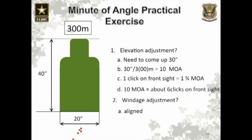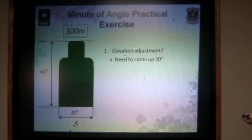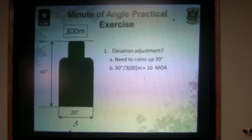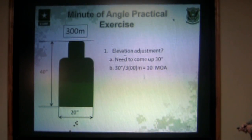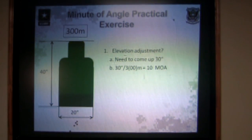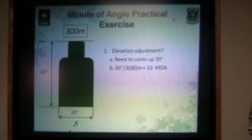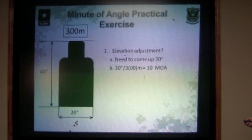For our elevation adjustment, we need to come up about 30 inches. Thirty inches at 300 meters: take 30 inches, divide it by the first number of your yardage — which is three — and it gives you 10 minutes of angle. Now we know we need to move up 10 minutes of angle on our sight system.